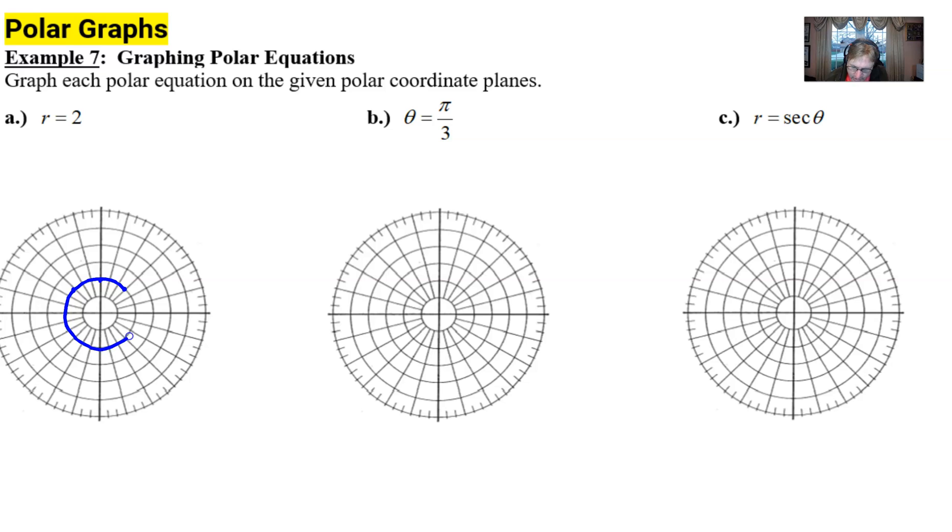Notice this is the circle that's two units out from the pole. And boom, you've just graphed r equals 2. We saw a similar problem in example 6 with r equals 4, so this probably wasn't a big surprise.